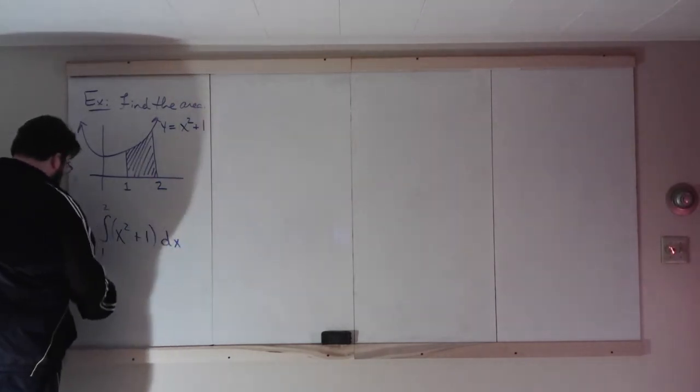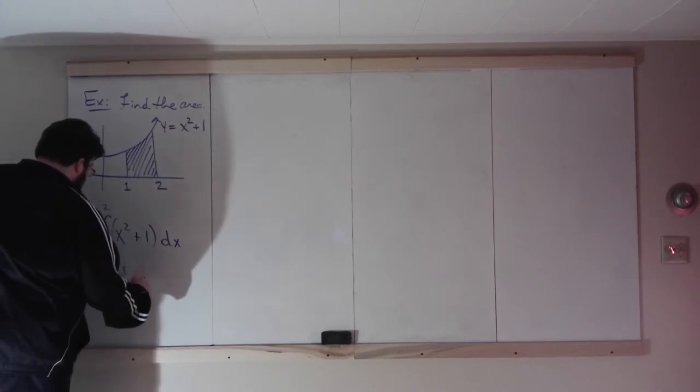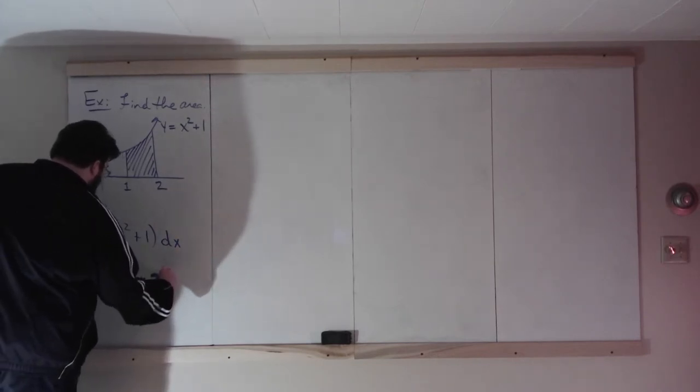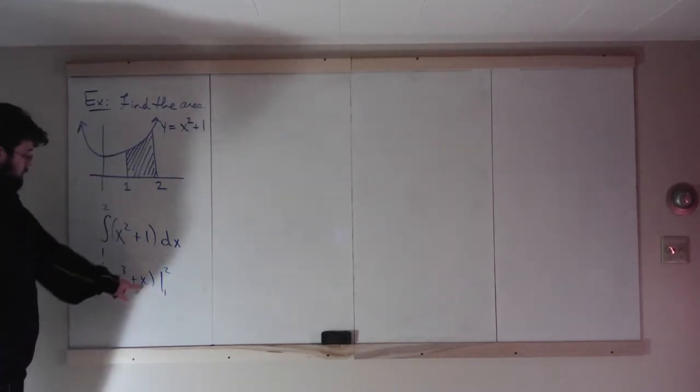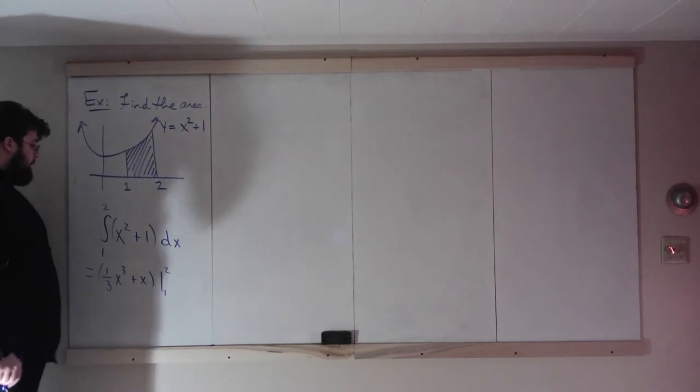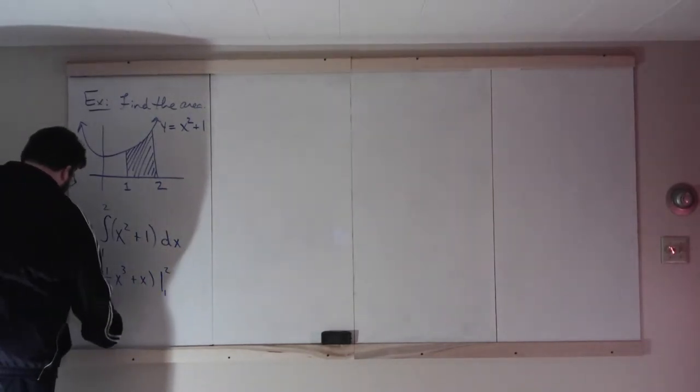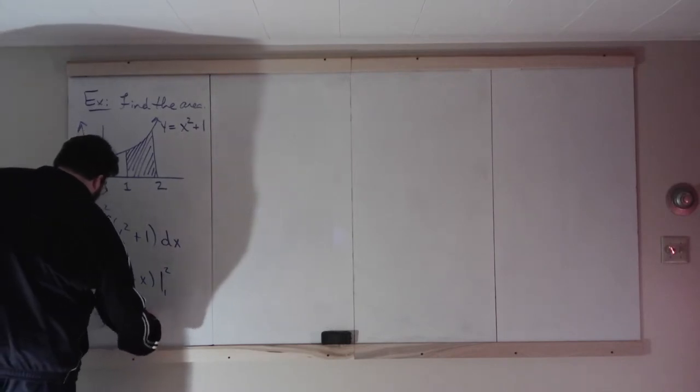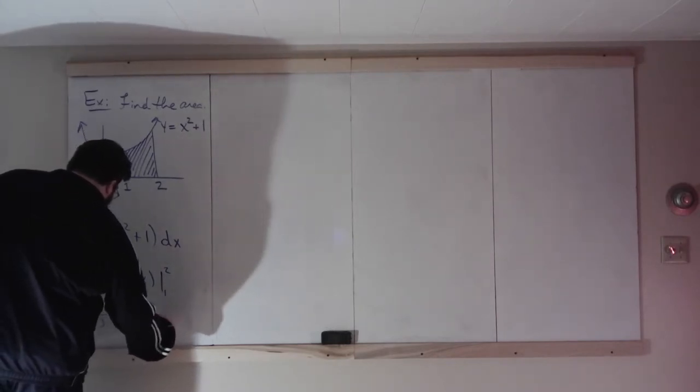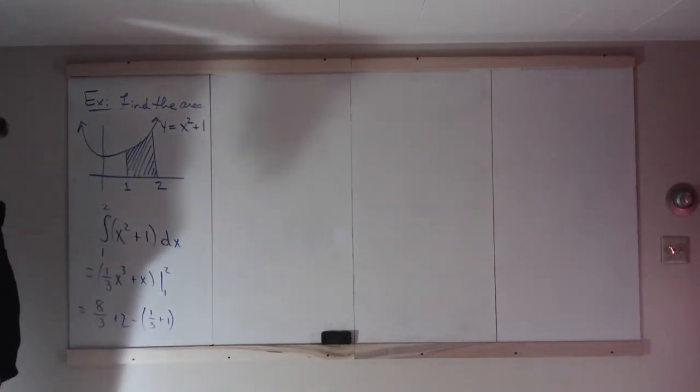How do we do this? It's a third x cubed plus x evaluated from 1 to 2. The derivative of this is x squared plus 1, so that's right. Evaluate from 1 to 2, and what do we get? We get 8 thirds plus 2 minus 1 third plus 1.